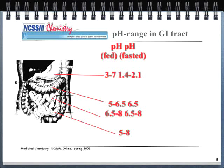The pH of the stomach is between 3 and 7 after eating, and 1.4 to 2.1 on an empty stomach. This explains why some drugs say not to take them on an empty stomach, or not to eat before taking them — it all relates to changing the stomach pH. Values differ for other regions including the large intestine, small intestine, and duodenum.